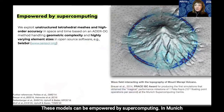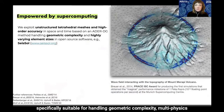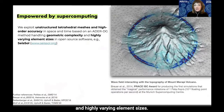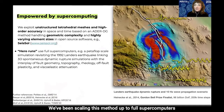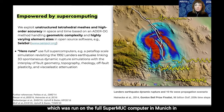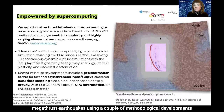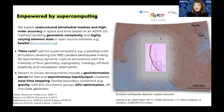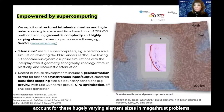These models can be empowered by supercomputing. In Munich we've been developing an open source earthquake and seismic wave propagation modeling tool called CISOL, which is specifically suitable for handling geometric complexity, multi-physics, and highly varying element sizes. We've been scaling this method up to full supercomputers — so-called hero runs — including a simulation of the 1992 Landers earthquake, resolving seismic waves up to 10 Hz, run on the full SuperMUC computer in Munich in 2014. We've ported these methods to megathrust earthquake scales using a geo-information server and a local time-stepping method to account for hugely varying element sizes.